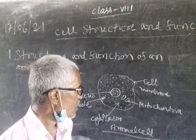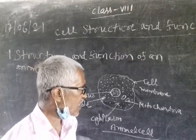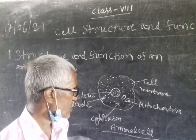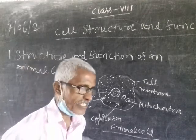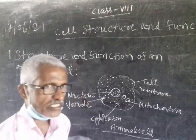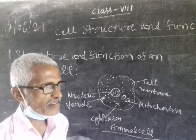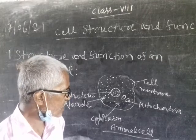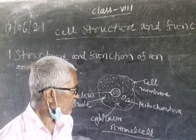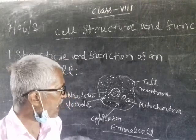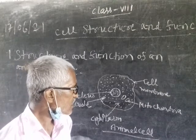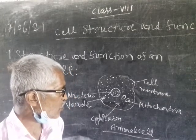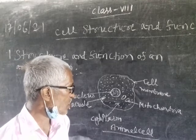Now the second part is mitochondria. Mitochondria are rod-shaped cell organs. Here respiration takes place. During respiration, energy is released. It means that mitochondria provide energy to the cell. Hence it is also known as the powerhouse of the cell.